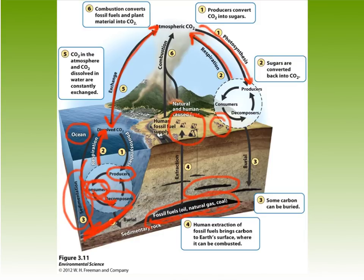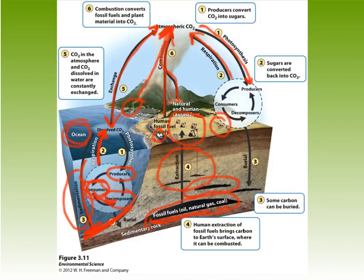For billions of years, the carbon cycle had been cycling naturally. But now humans are putting it out of balance. We extract fossil fuels and use them in cars and industry, which increases CO2 concentrations in our atmosphere. This is causing the carbon cycle to be out of balance, with implications such as acidification of the oceans and the warming of our climate.